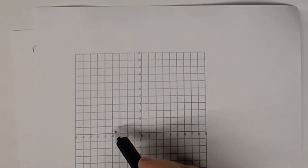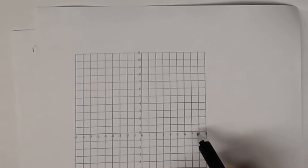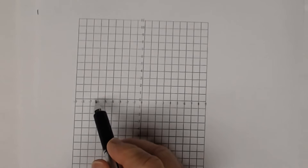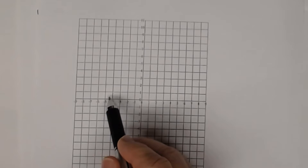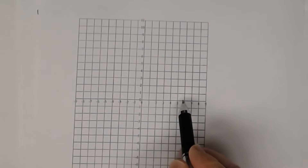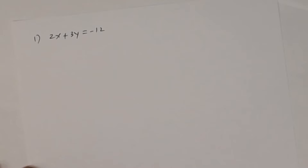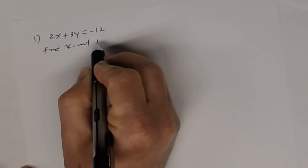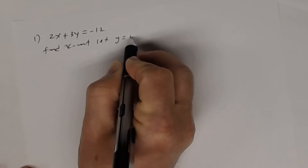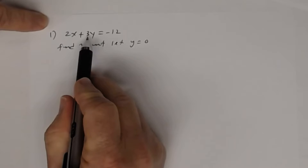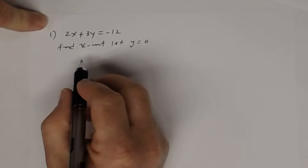Remember, when the graph crosses the x-axis, that's going to be the x-intercept. No matter where the graph crosses the x-axis, the y-coordinate is always 0. So when you want to find the x-intercept, you're going to let y equal 0. So in place of y in the equation, you're going to substitute 0 and then solve for x.